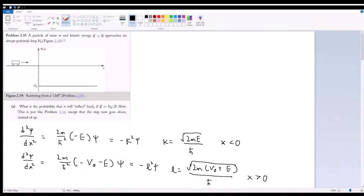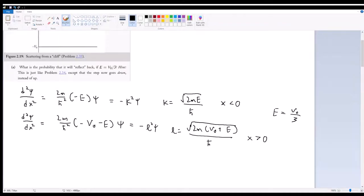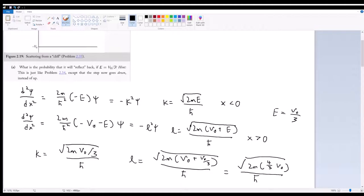Immediately, we know that E is equal to V0 over 3. So immediately, we can do some redefining. We can say k is actually equal to the square root of 2m times V0 divided by 3 over ℏ. And L is equal to the square root of 2m times V0 plus V0 third divided by ℏ, or this is equal to the square root of 2m times 4 thirds V0, all divided by ℏ.